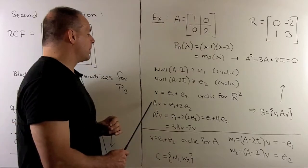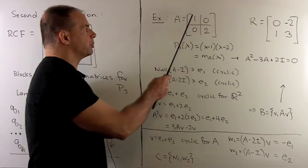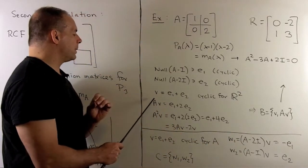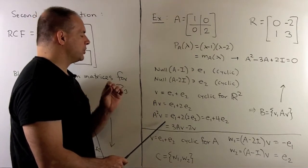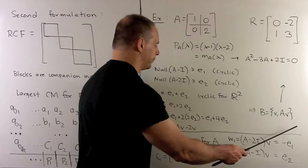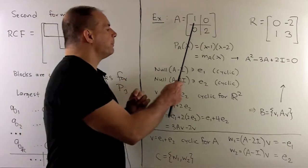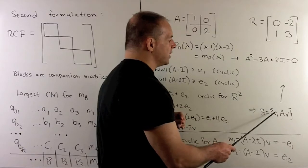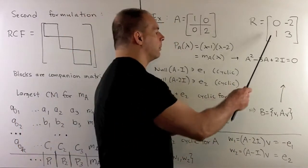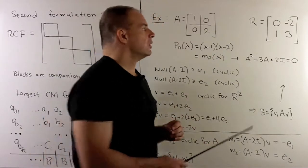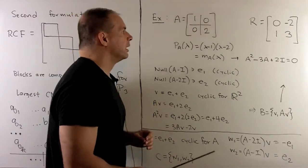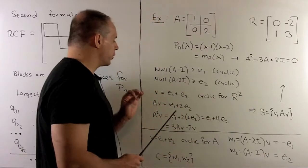We keep applying A. Applying A to v = e_1 + e_2 gives e_1 + 2e_2, picking off the eigenvalues. So v and Av are linearly independent, giving us a basis. Applying A again gives A²v = e_1 + 4e_2, which we can write as 3Av − 2v. The matrix of A with respect to our new basis: v goes to Av, so the first column is (0, 1). Then Av goes to A²v = −2v + 3Av, giving the second column (−2, 3). So that shows us how to go from the diagonal form to the companion matrix form.